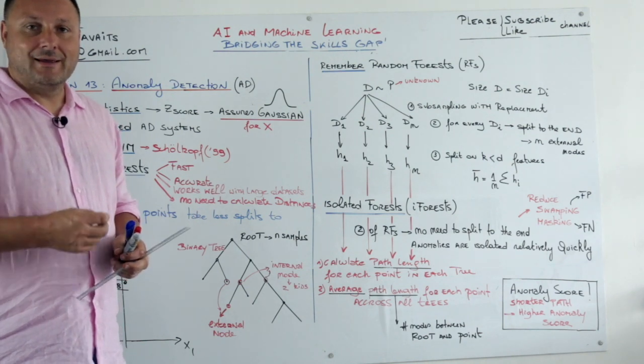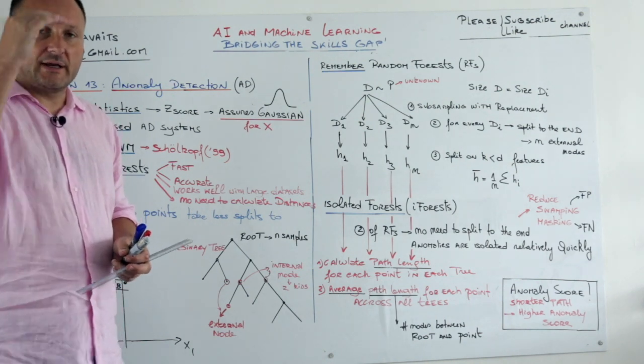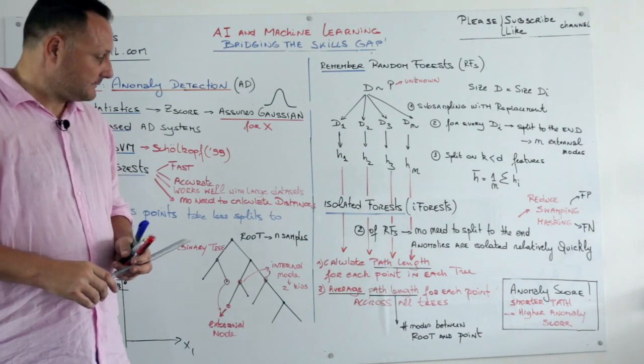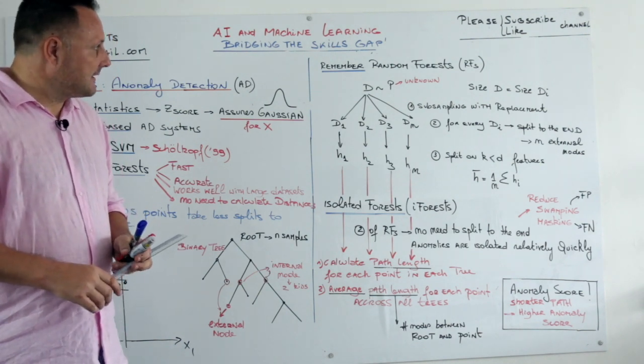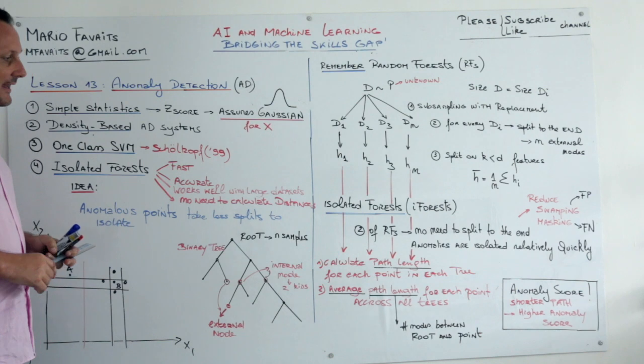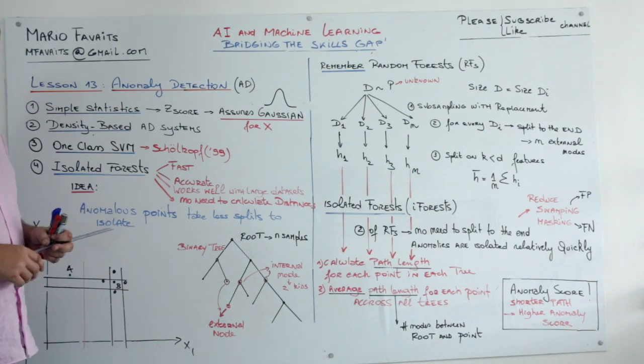The shorter the path length, the higher the anomaly score. And actually you can rank. So that's it. That is our last algorithm. Very popular isolated forest.